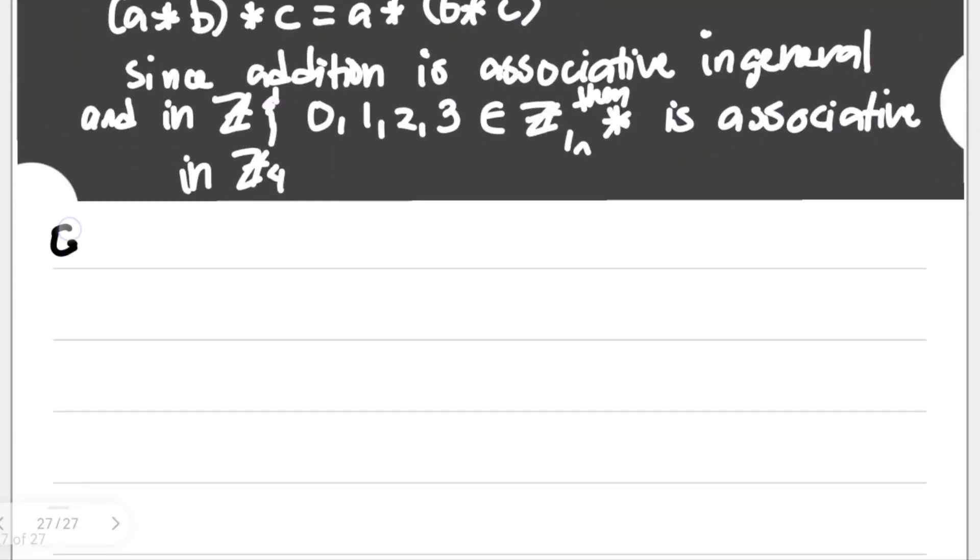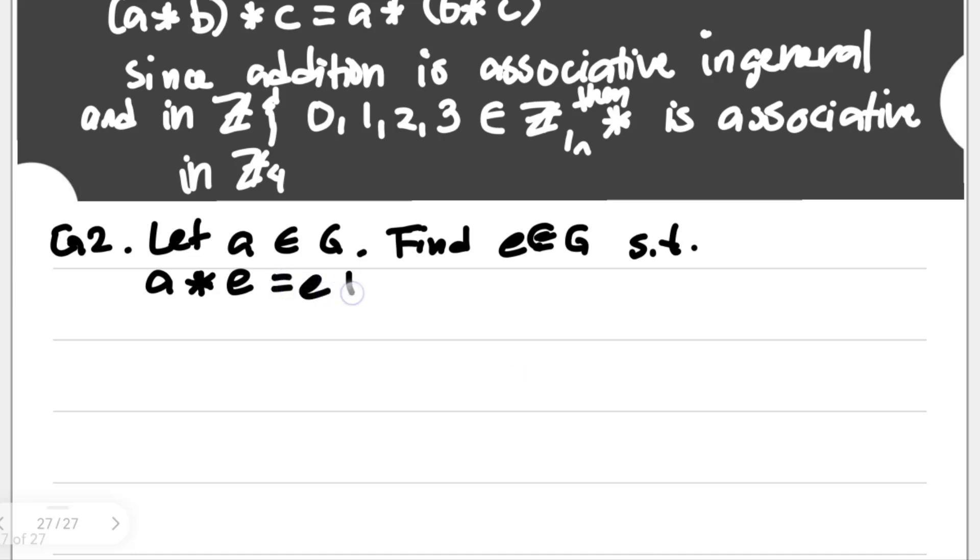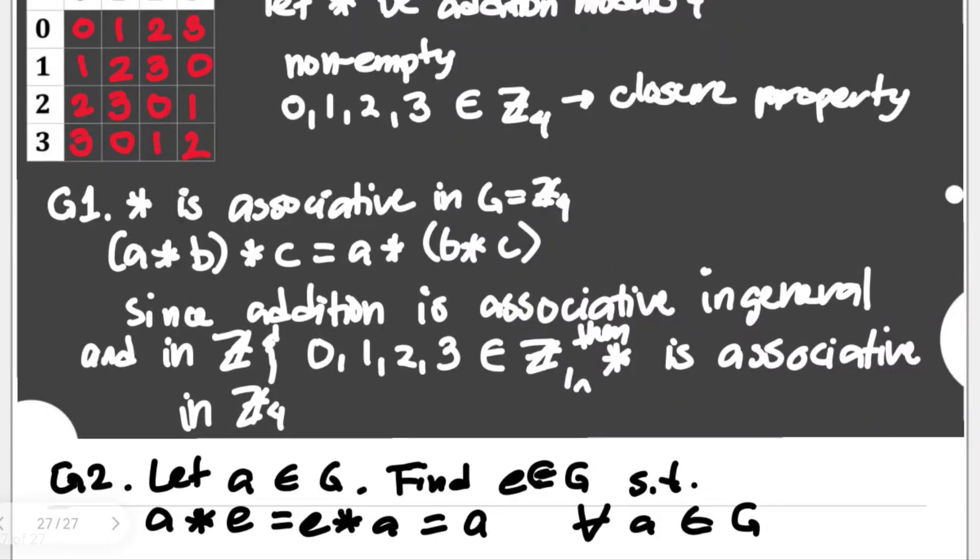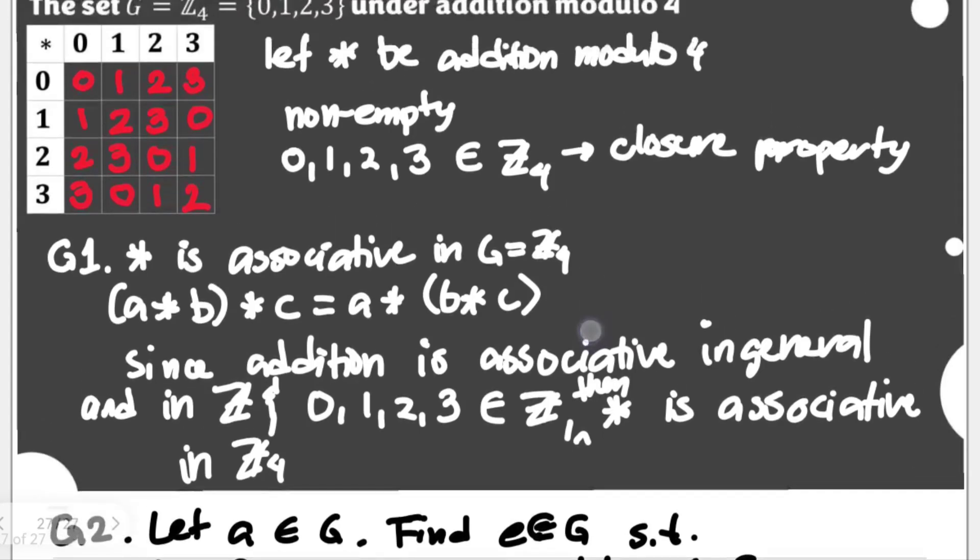G2 is for our existence of an identity element. So you have here, let A be element of G. Then we find E which is element of G, such that we have here A star E is equal to E star A equal to our A, for all A element of our G. So we could see it in our Cayley's table actually.